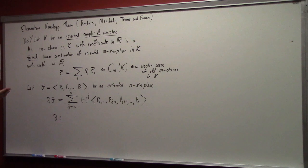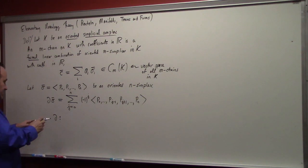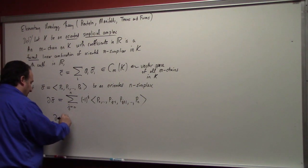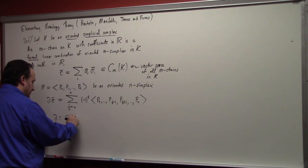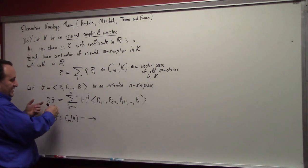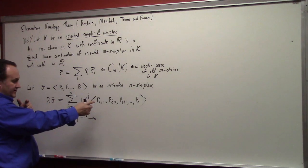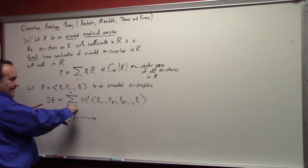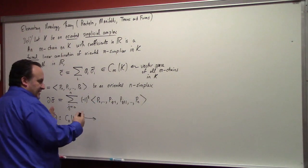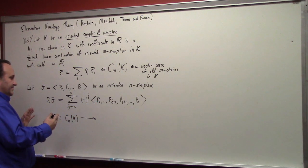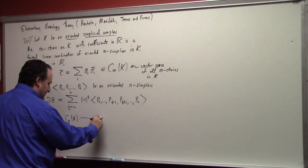This linearly extends to a mapping from m-chains to what? You're taking an n-simplex and getting rid of one vertex, so that gives you an (n-1)-simplex. The boundary operator maps m-chains to (m-1)-chains.